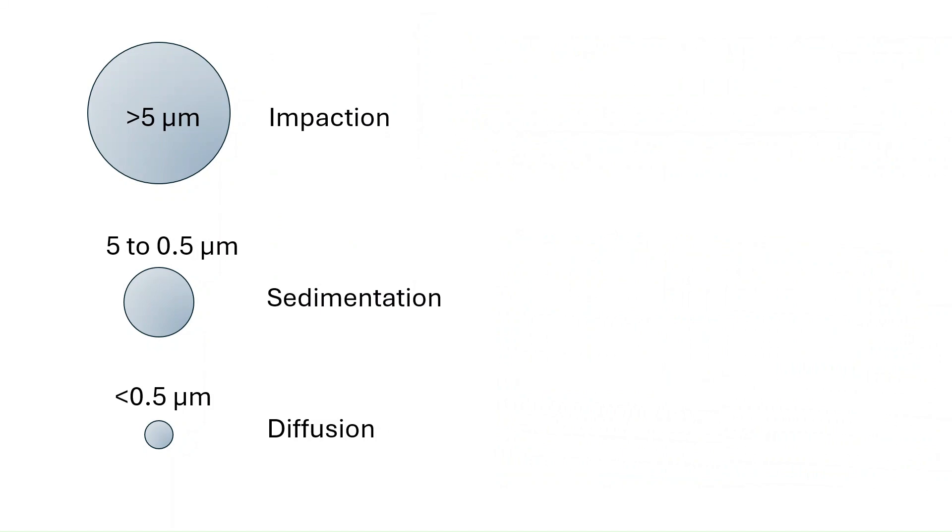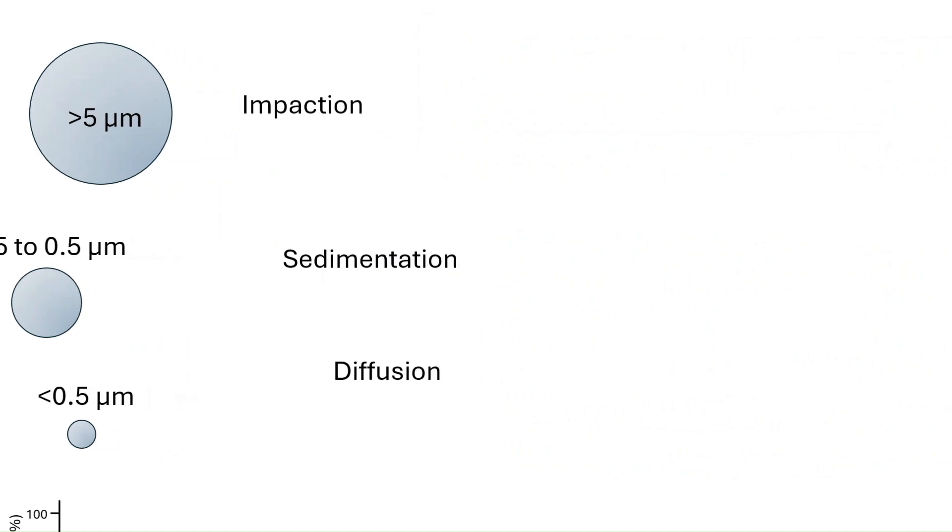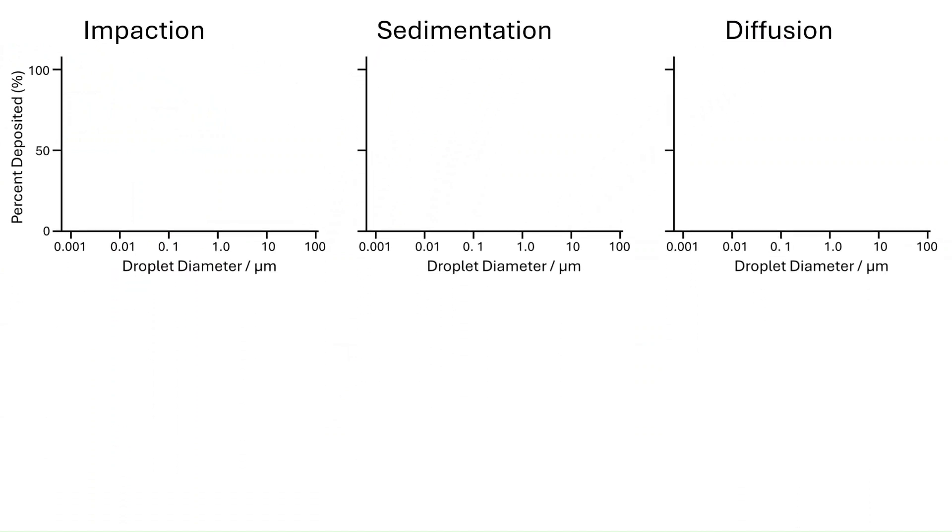So in short, the size of the aerosol will dictate how it deposits. Alright, so let's bring this all together. If we plot the percent of aerosol that deposits in the lungs as a function of size, only the largest aerosol deposits via impaction. None of the smaller aerosol will deposit via impaction. A large portion of the mid-sized aerosol will deposit due to sedimentation. And the smallest size aerosol will deposit due to diffusion. None of the larger aerosol will deposit via diffusion.